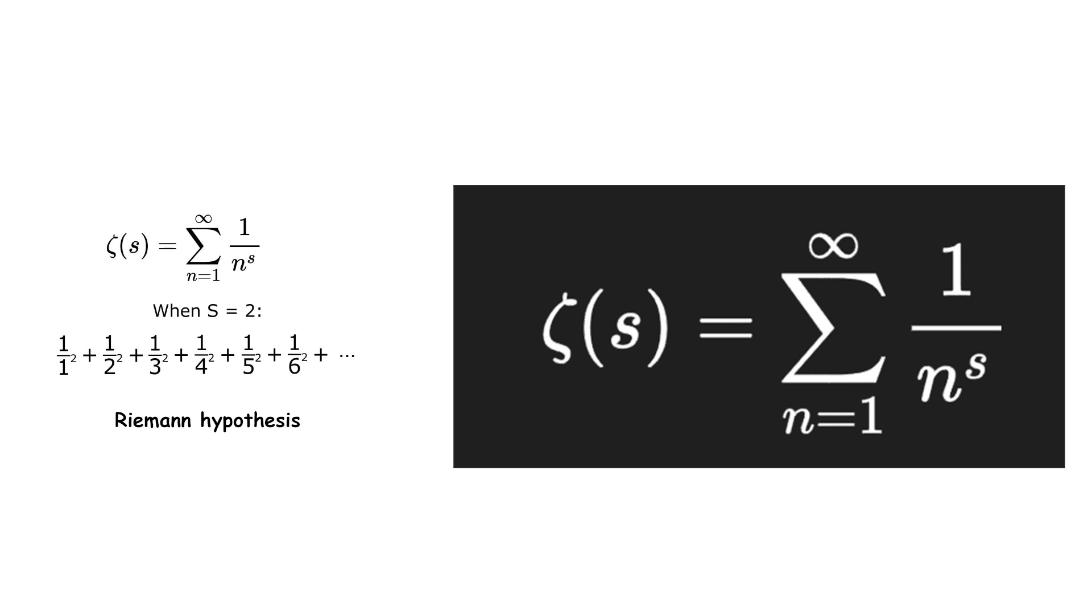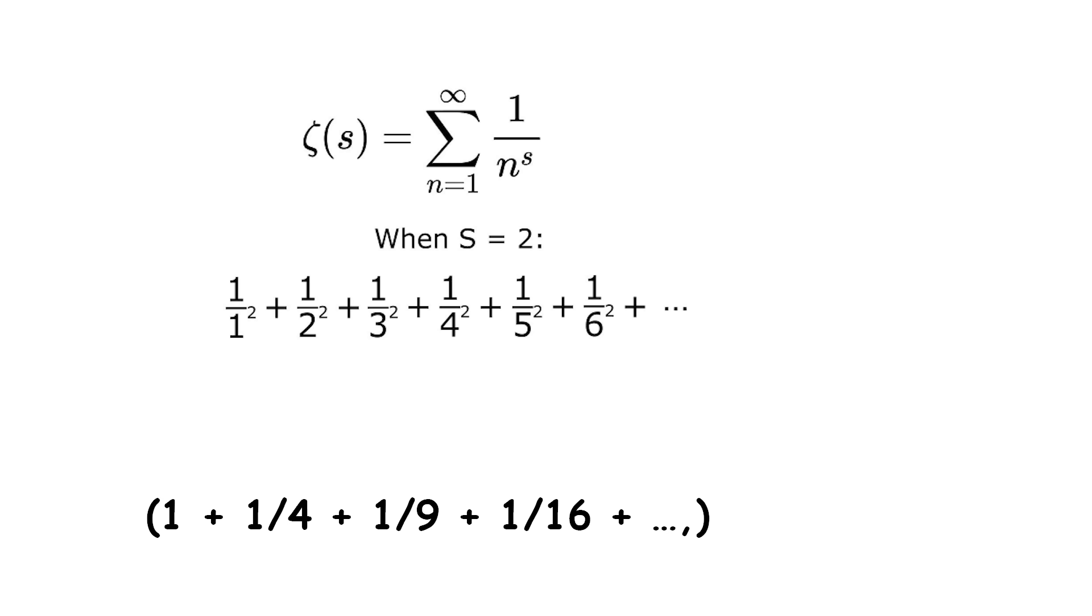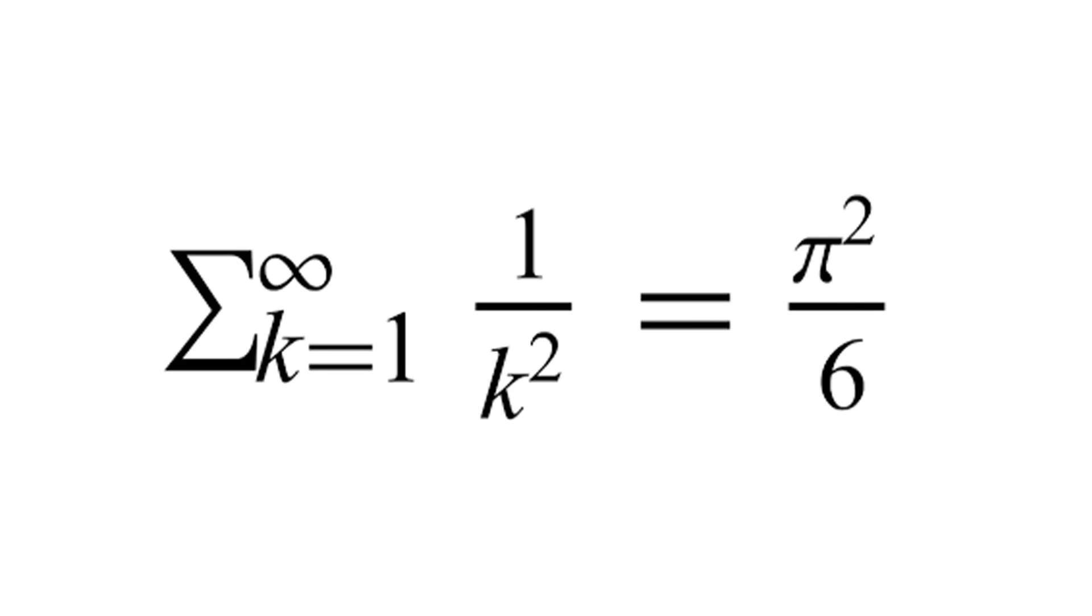There is a function called the Riemann zeta function. For each s, this function gives an infinite sum, which takes some basic calculus to approach for even the simplest values of s. For example, if s equals two, then zeta of s is the well-known series, which strangely adds up to exactly pi squared divided by six.